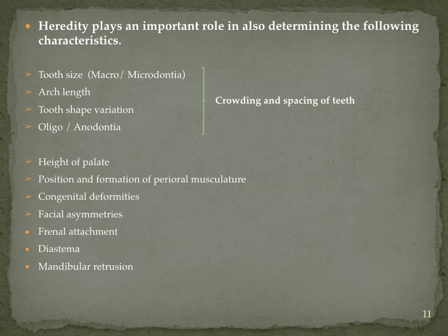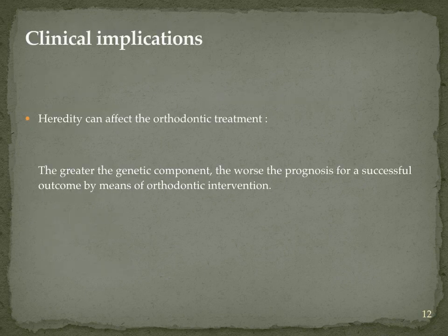Heredity also plays an important role in tooth size, tooth number, tooth shape and arch length, meaning crowding and spacing of the dentition can be due to genetic factors. The clinical implication is: the greater the genetic component, the worse the prognosis for a successful orthodontic outcome. Hence we must inform the patient prior to treatment and obtain an informed, written, signed consent.